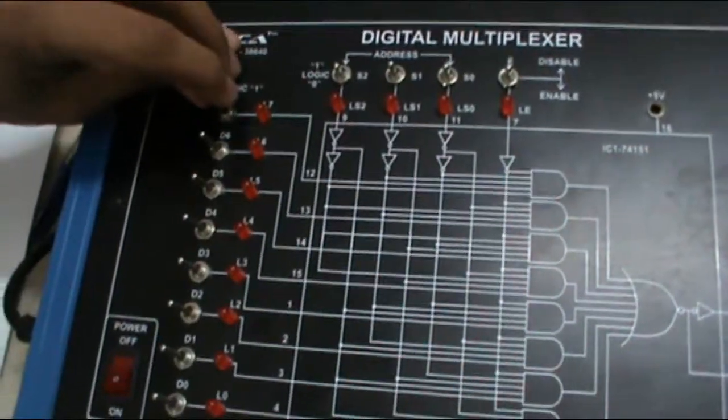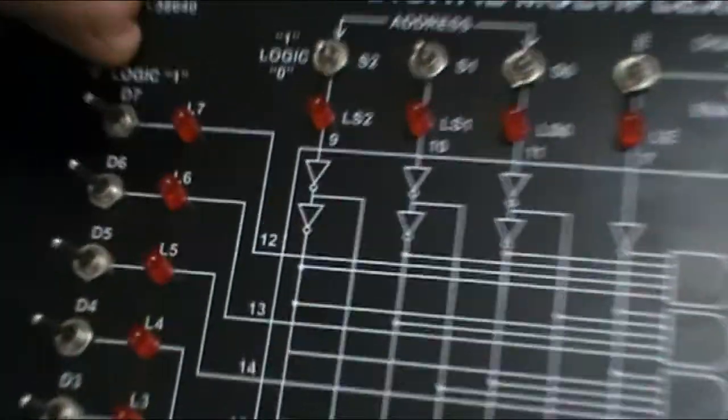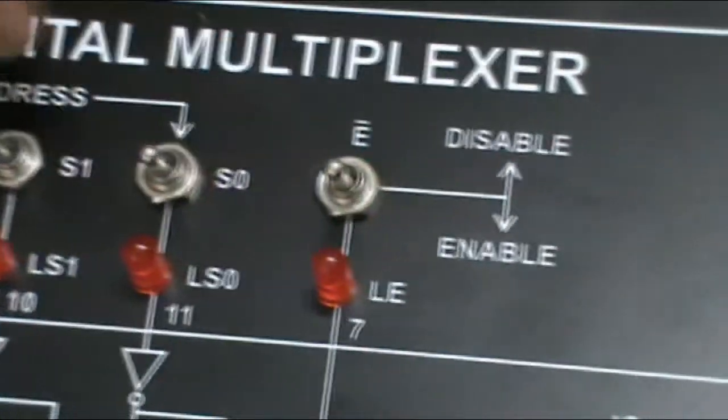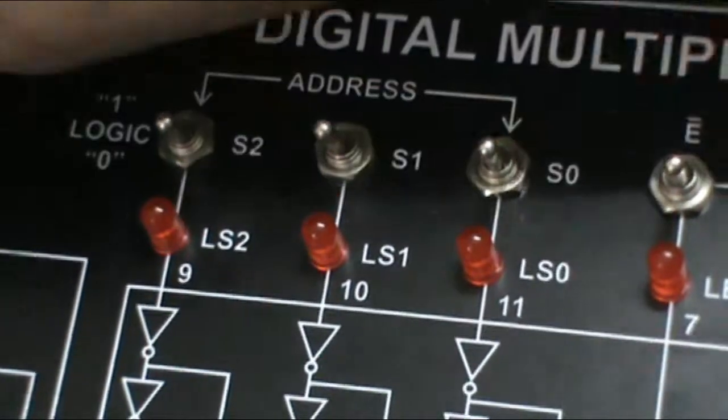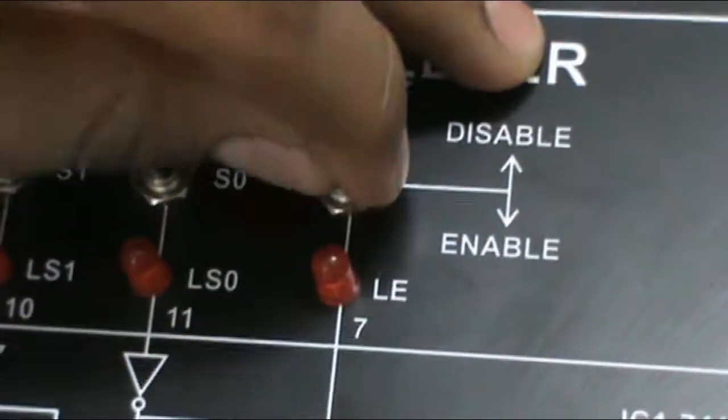These are the switches which is logic 1 and logic 0. These are the 3 address lines S0, S1 and S2. This is the enable-disable switch. These are the 2 output lines LZ bar and LZ.